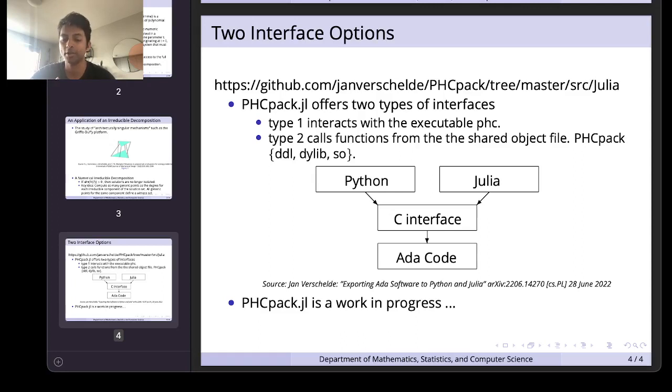Unlike type one interface where we process the input and obtain the output in Julia data structures, the C interface does all the heavy lifting. If you're interested in how this interface works, I suggest you look at the reference or visit the GitHub site whose link is shown at the top. We'll note that PHCPACK.jl is still a work in progress.